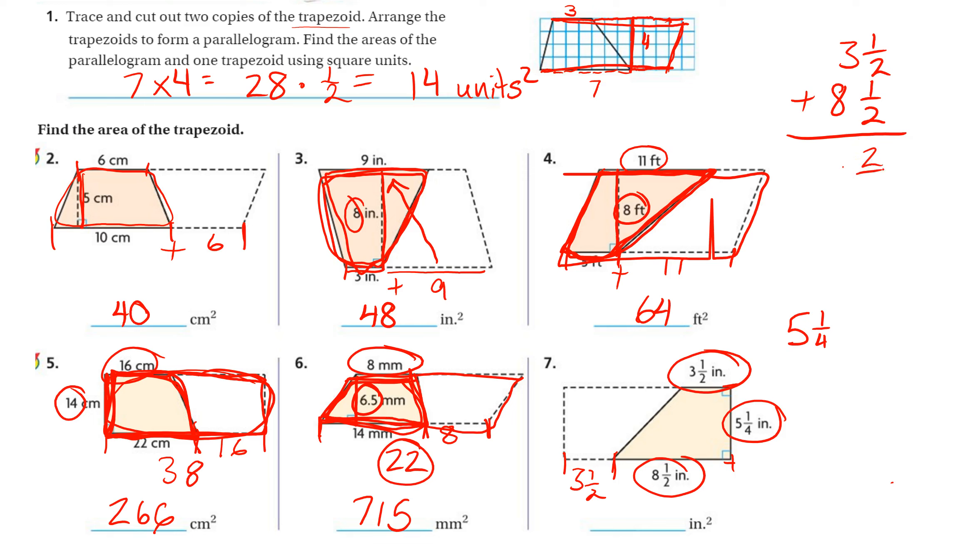1 half plus 1 half is 2 halves, which that equals 1 whole. So really, 2 halves carries a 1. That makes that 4 plus 8 is 12. So this whole length is 12. And then I need to do 12 times the height, 5 and 1 fourth. Don't work it out that way. 5 and 1 fourth, so times 5 and 1 fourth. Again, a lot of different ways you can choose to work this out.